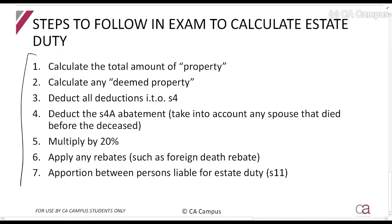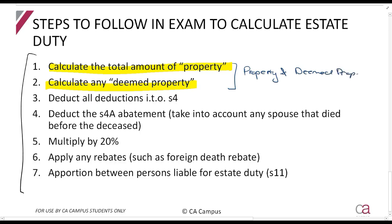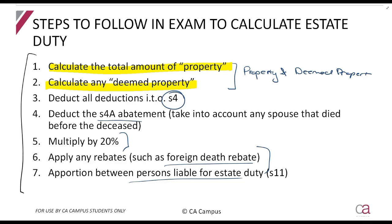To calculate estate duty in general: first, determine the total amount of property and deemed property — you can combine these two under one heading called 'Property and Deemed Property.' Then deduct deductions in terms of Section 4, remembering to work through all of them. From that, deduct your three and a half million Section 4A abatement, taking into account any spouse which will increase it. Multiply by 20%, apply any rebates such as the foreign death rebate, then calculate who is liable for the estate duty. This section is not too complicated, so it's a great place to score marks.